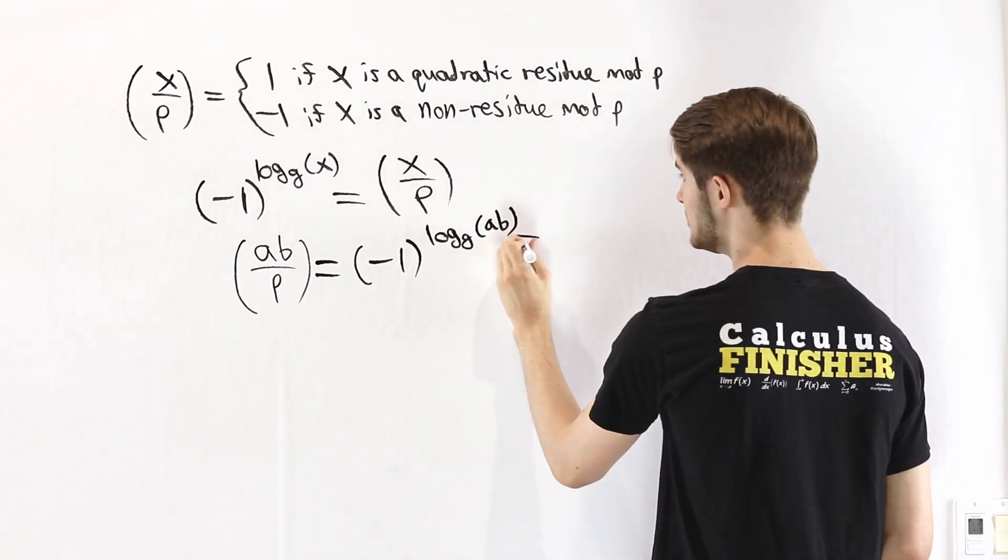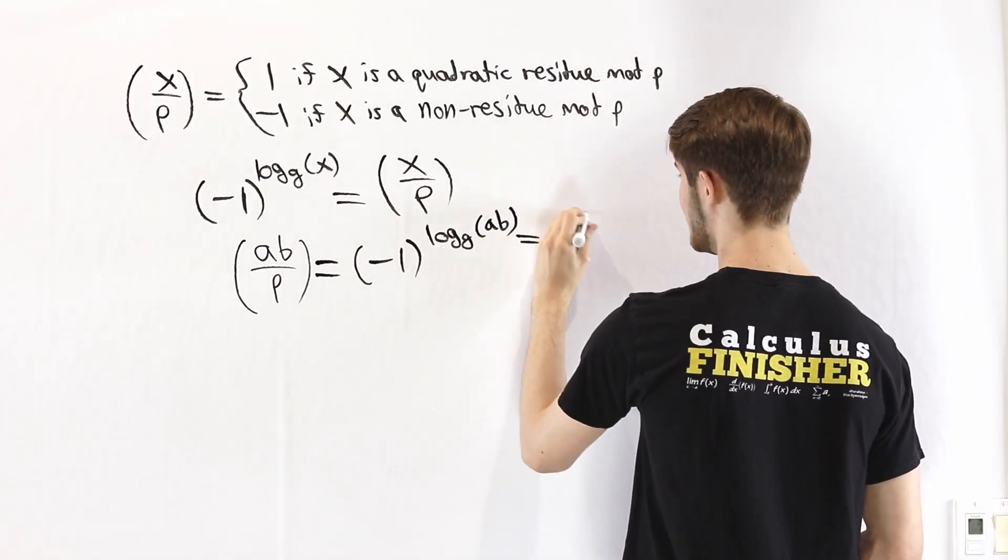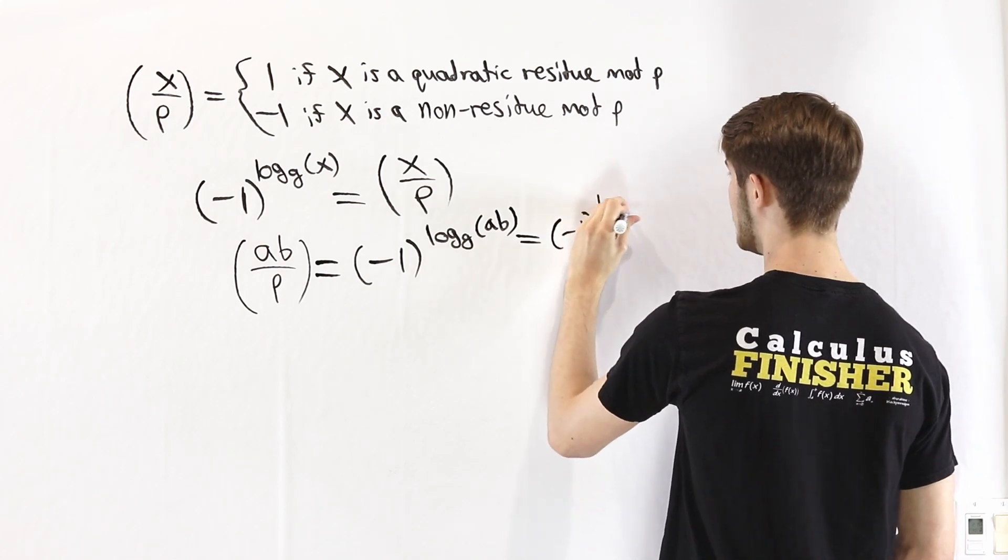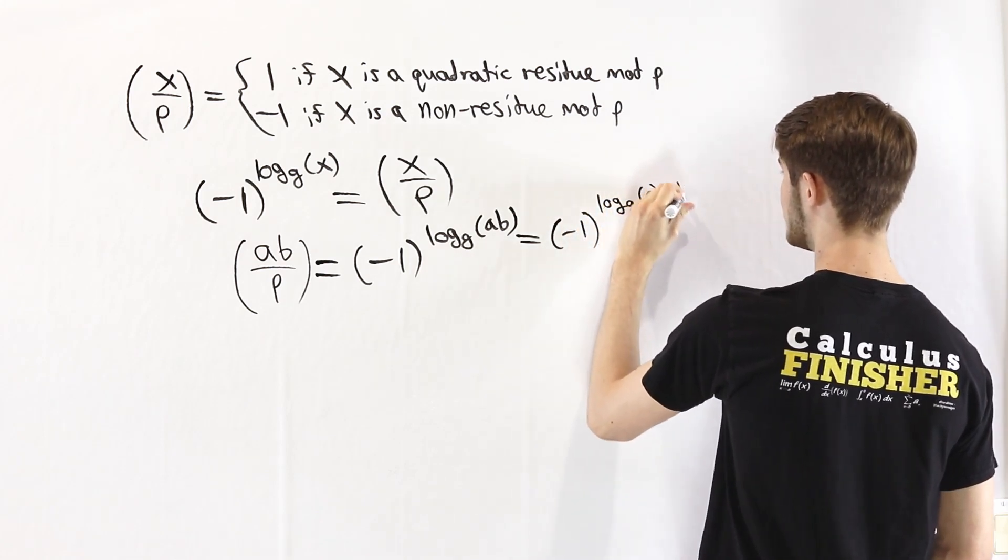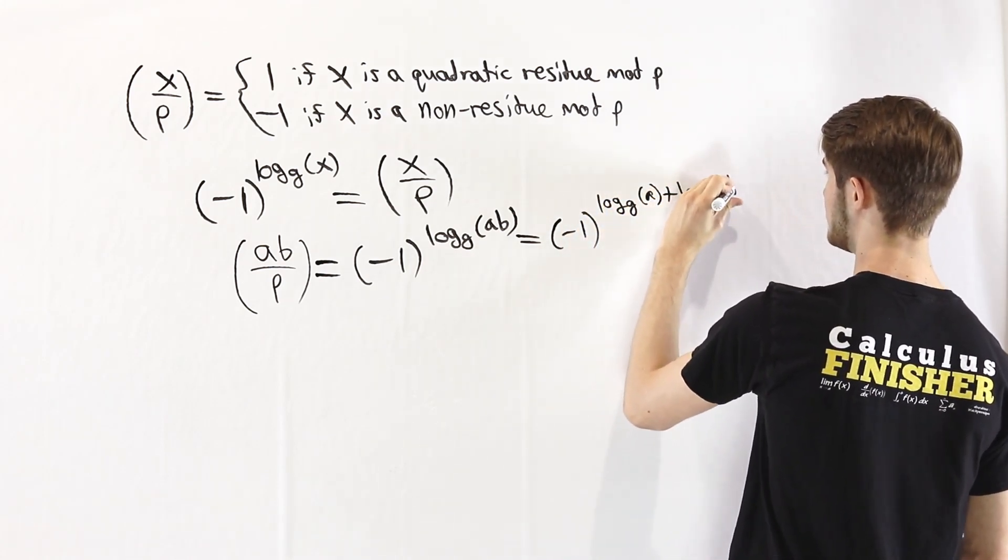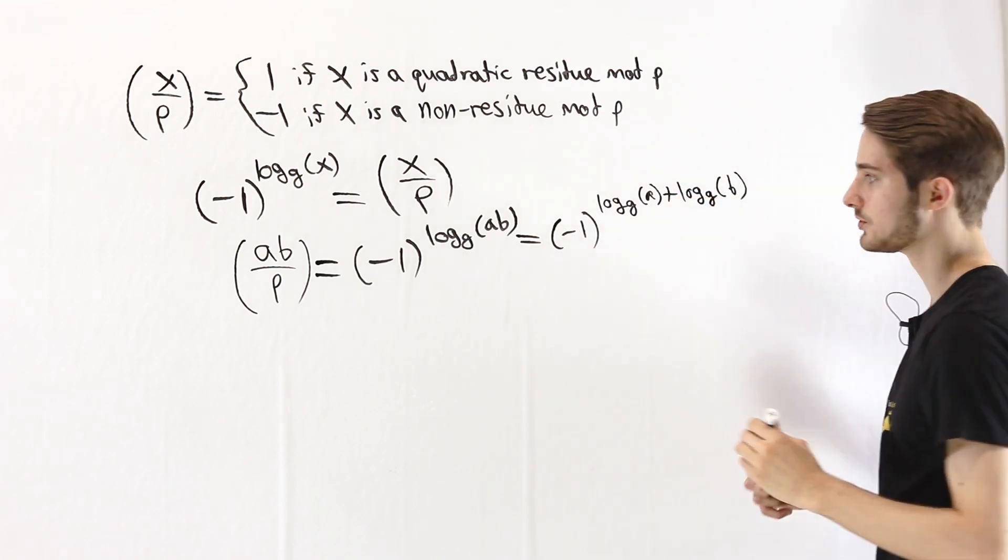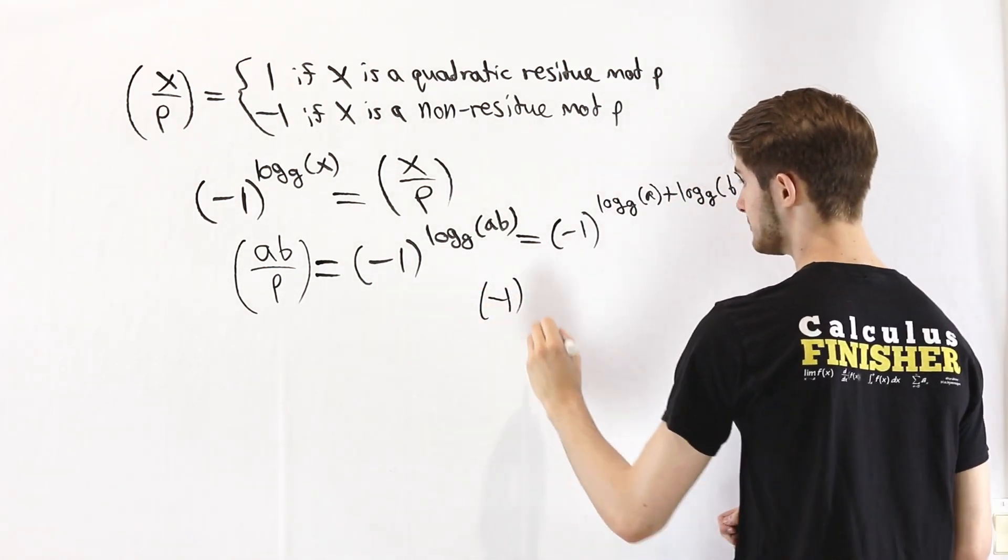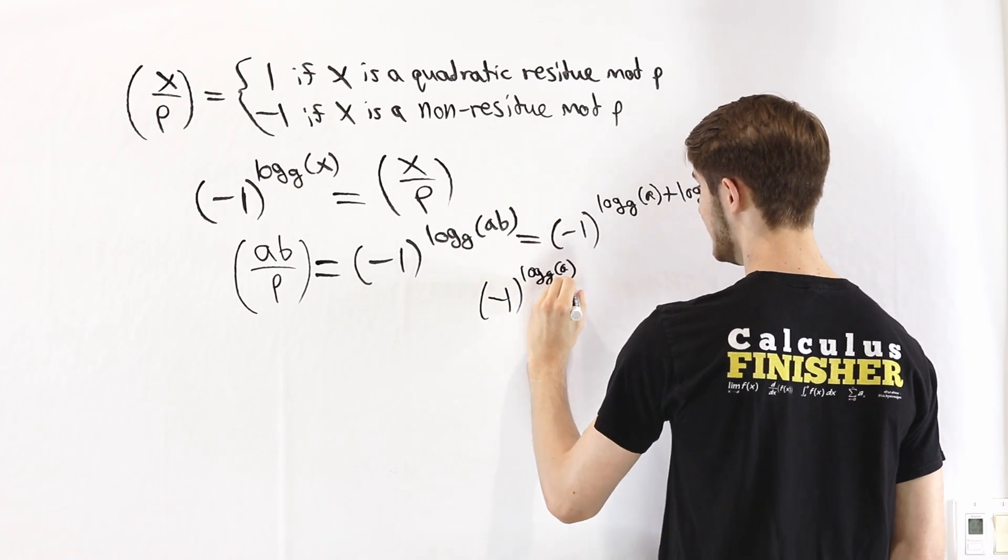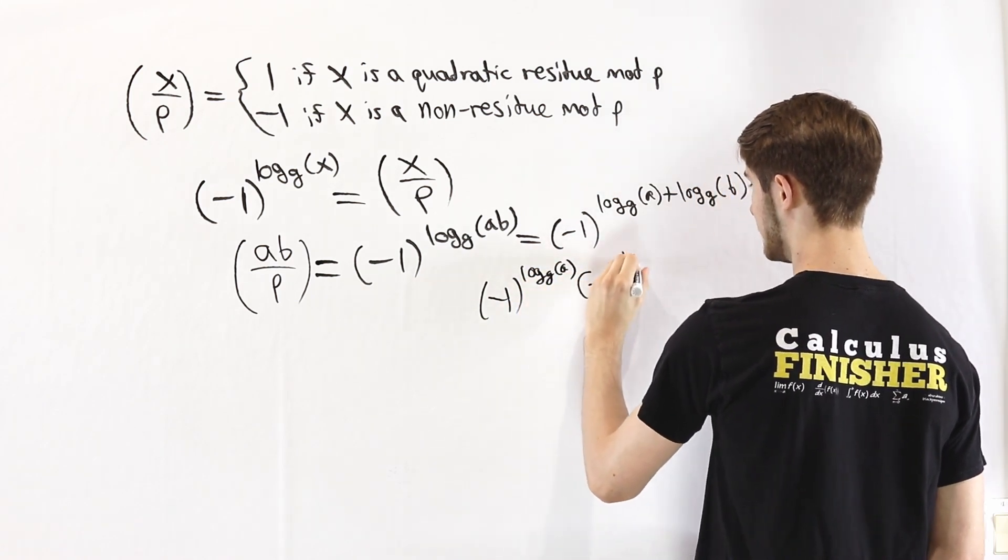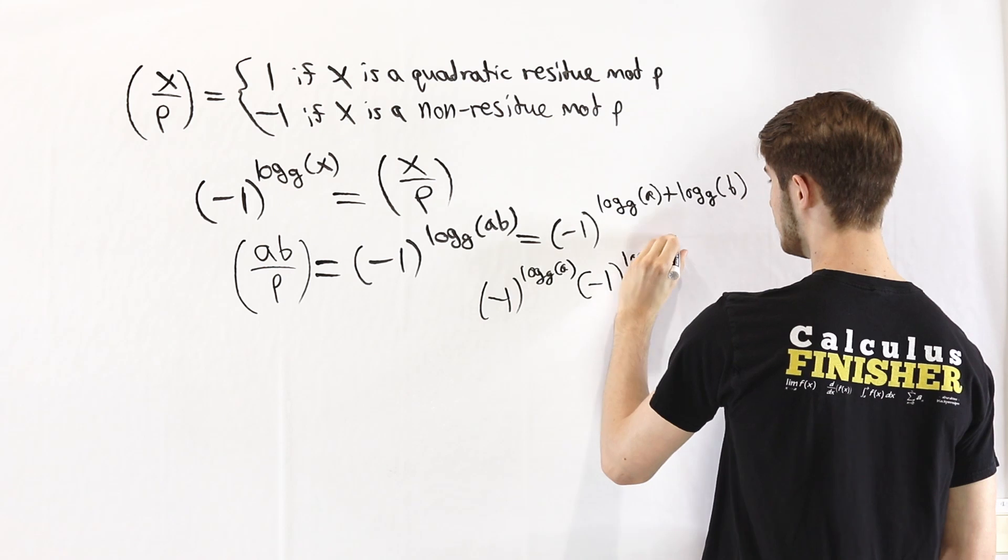But we know by rules of indices we can split up the top here. So we have (-1) to the power of log base g of a plus log base g of b. And from here by the rules of exponents, we can split this up into products: (-1) to the log base g of a times (-1) to the log base g of b.